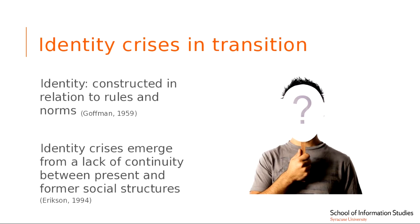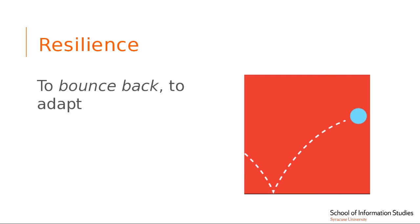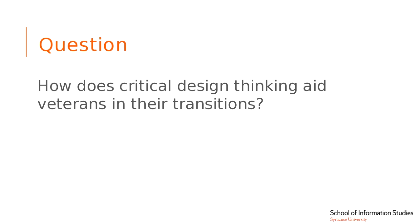In addition, veterans build a sense of camaraderie — a feeling of brotherhood or sisterhood with those around them, always having one another's backs. What I'm most interested in is: when veterans are going through these identity crises and transitions, how are they bouncing back? How are they learning to navigate and develop new identities that they can live with in the civilian world? This leads to the question: how does critical design thinking actually aid veterans as they're managing their new identities?